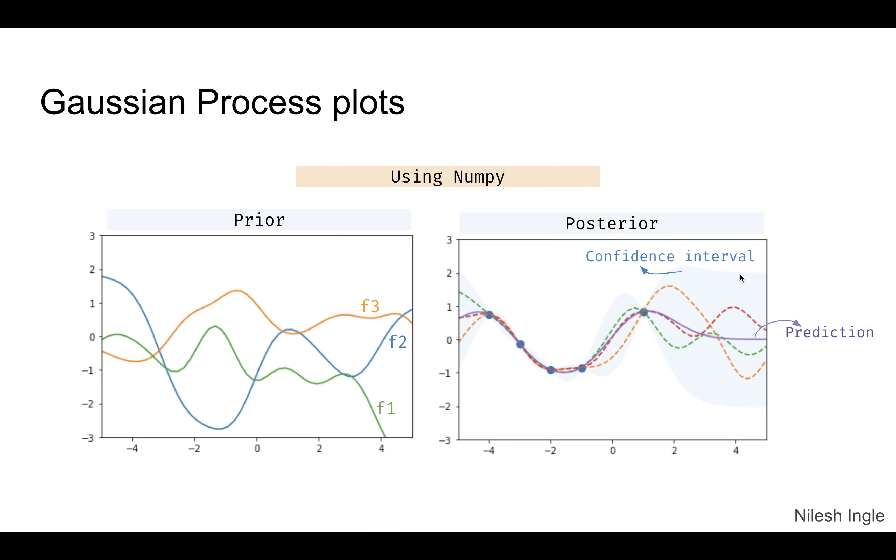You can also see that the functions tend to become more wavy or irregular in those regions because of the increased uncertainty. The same particular fit can be done in scikit-learn using the Gaussian process regressor.